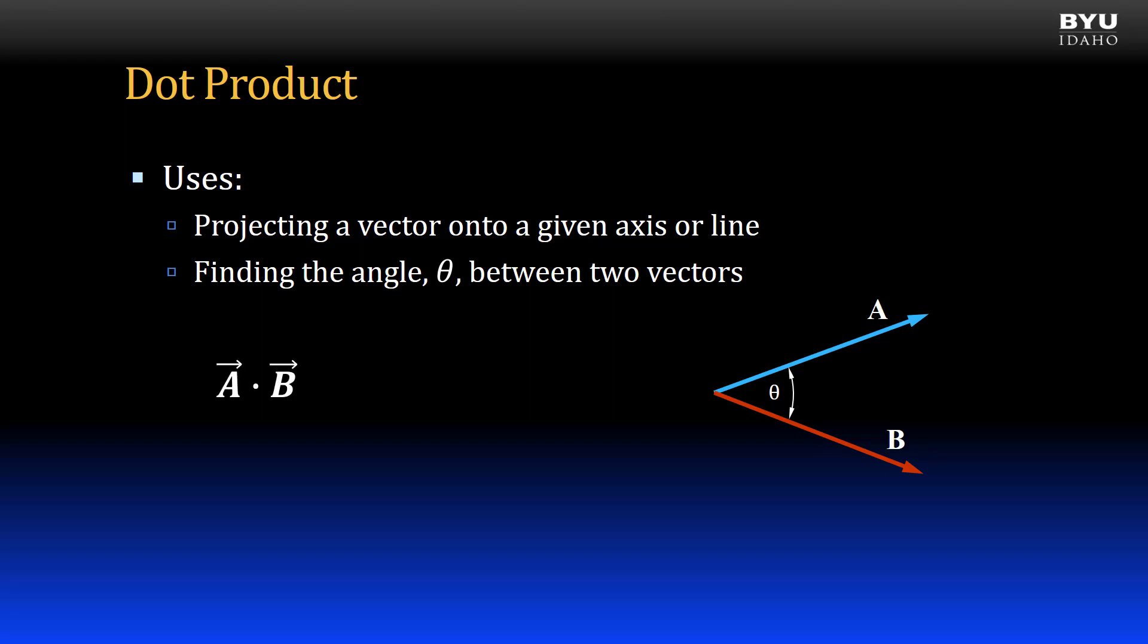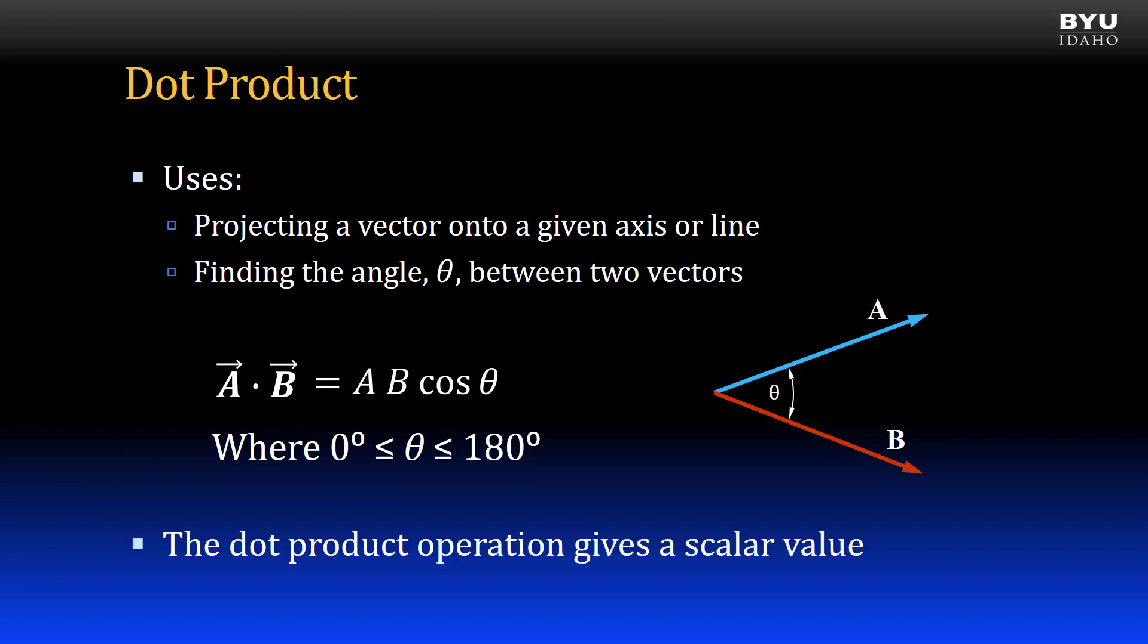Here is how we write the dot product. We say vector A dot vector B. It is equal to the magnitude of A times the magnitude of B times the cosine of the angle theta between those two vectors, where theta is between 0 and 180 degrees. Note that the value the dot product gives us is a scalar, not a vector.